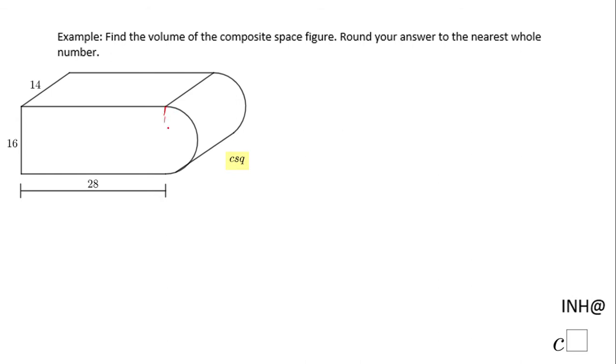Why do we call this a composite space figure? Because if you notice, if I draw this line, I have half of a cylinder and a rectangular prism. We can approach the problem by finding the volume of the rectangular prism, the volume of the cylinder, cut it in half, and then add the two numbers.